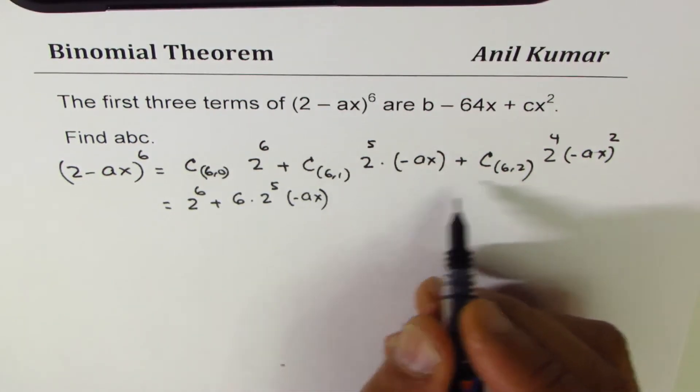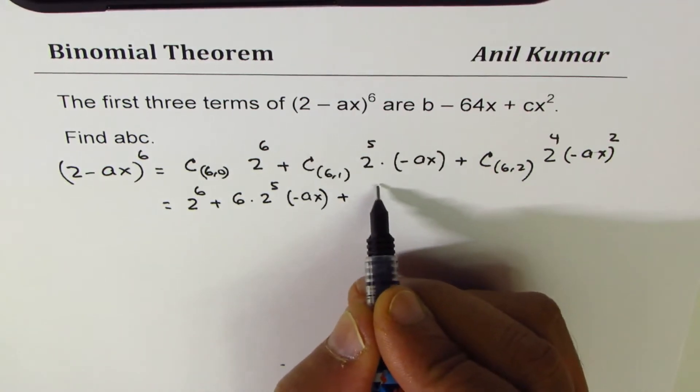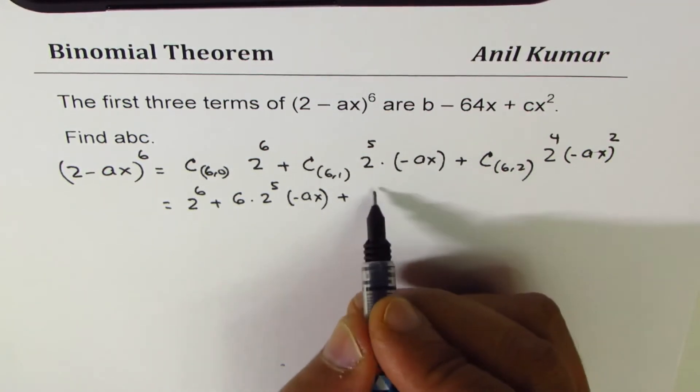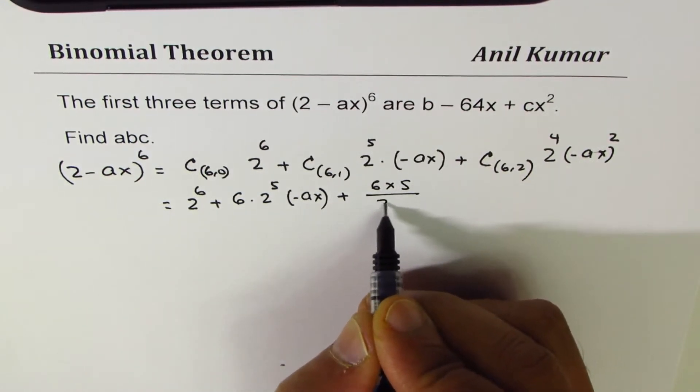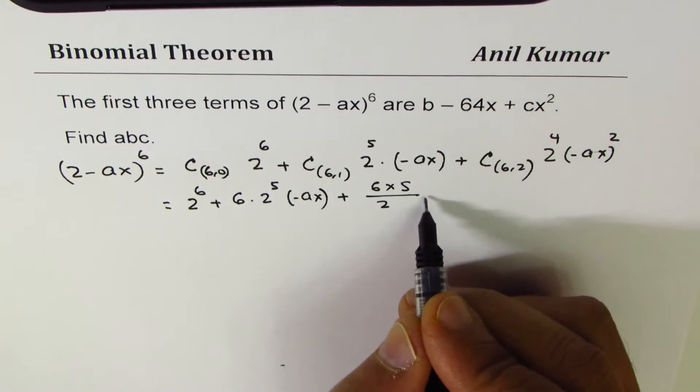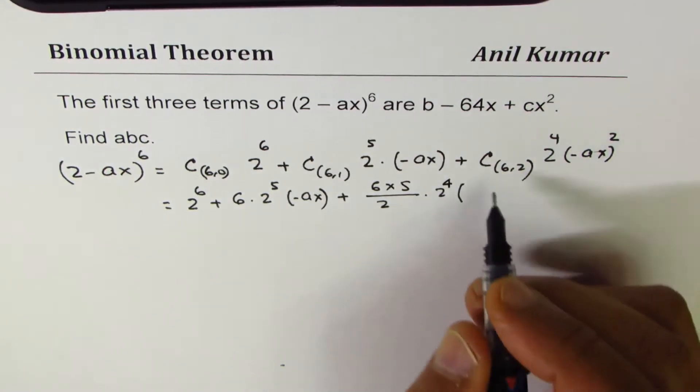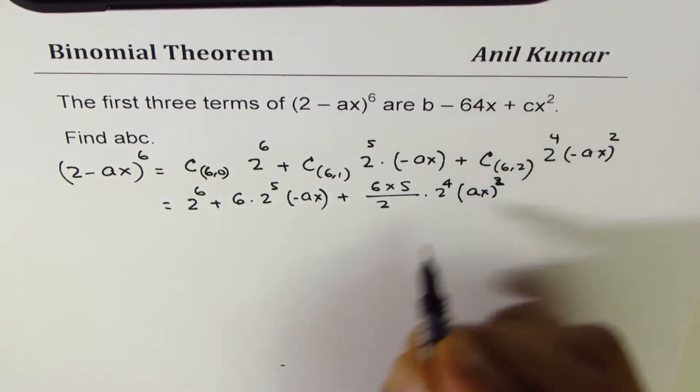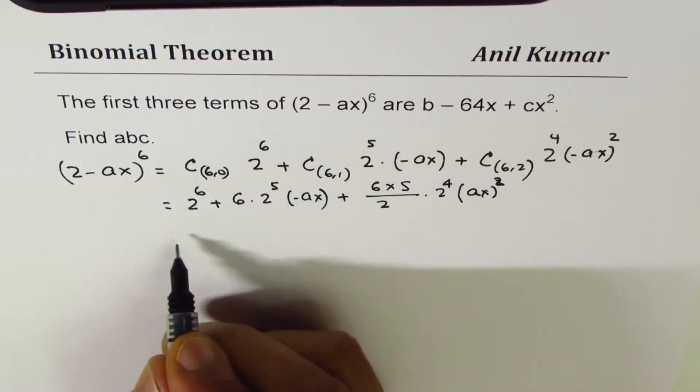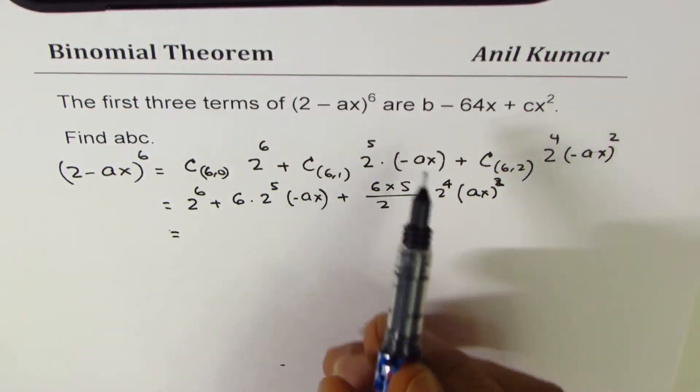2^5 times (-ax). C(6,2) so we get 6 factorial, I can write this as 6 × 5 over 2, times 2^4 times (ax)^2.